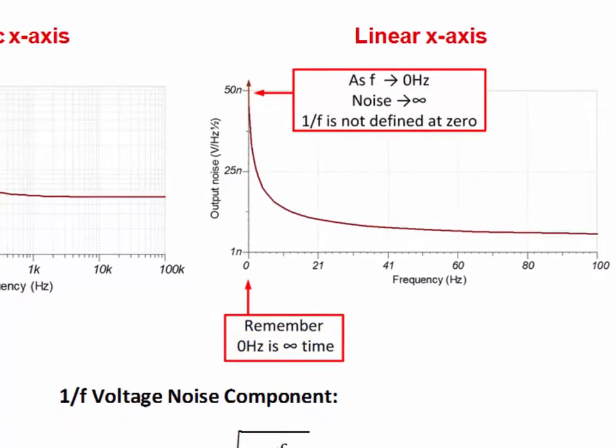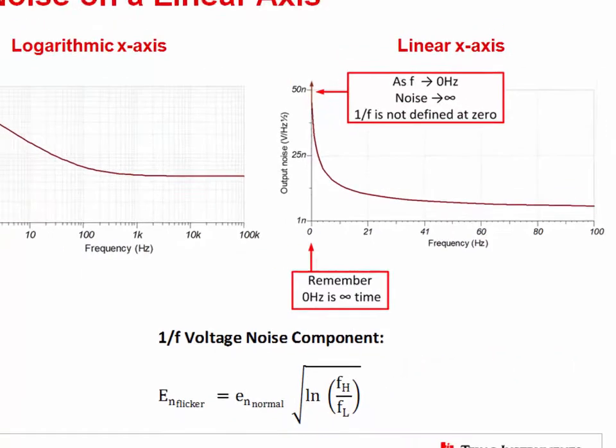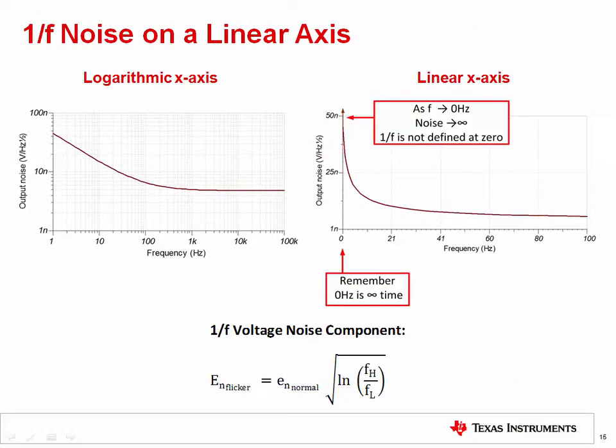So for practical considerations, we use 0.1 hertz for f sub l, the lower cutoff frequency. 0.1 hertz corresponds to 10 seconds. In a later noise video, we will take a deeper look into low frequency noise and the effect of observing noise over long time durations.